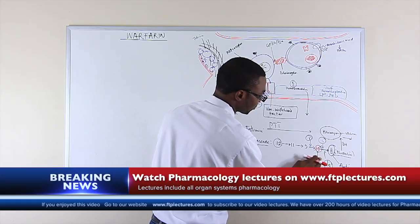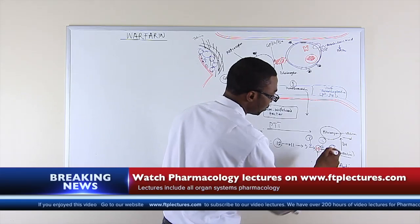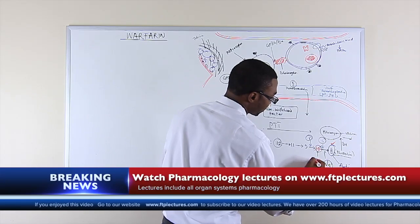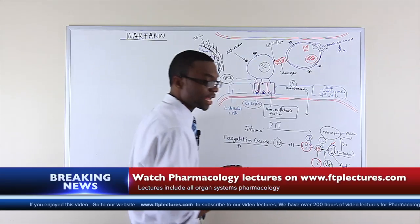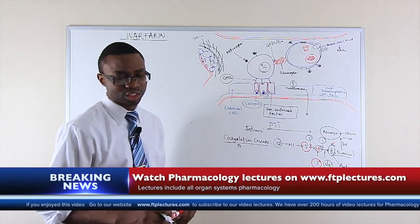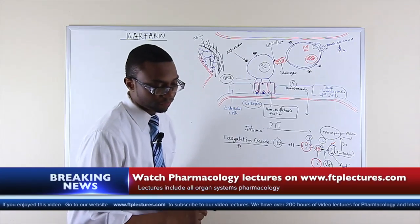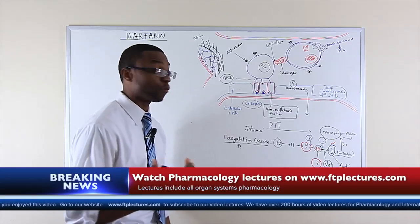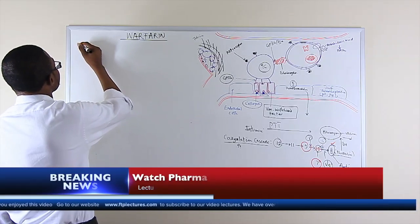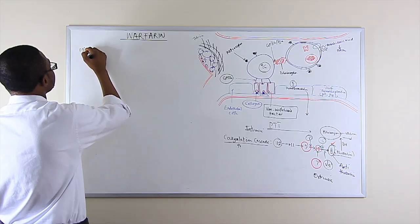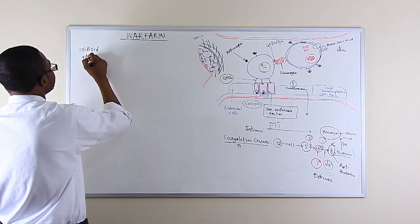So let's circle those. We have factor 2, factor 7, factor 9 and factor 10. Now before we actually move on, how are these factors actually activated in the body? That is definitely worth talking about because they require vitamin K. So vitamin K is normally in an oxidized form.